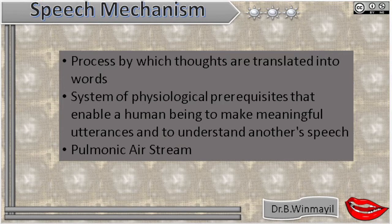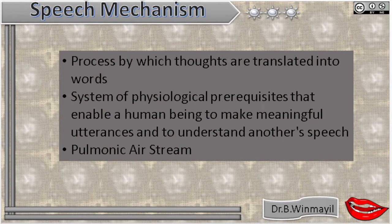Pulmonic air system is the key element in the process of uttering words and sounds. Pulmonic air stream is nothing but the air we breathe in and breathe out. Let us see what are the systems that help us to make or articulate a sound.